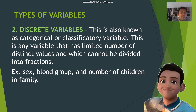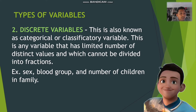Discrete variables are also known as categorical or classificatory variables. These are any variables that have a limited number of distinct values and which cannot be divided into fractions. Examples include sex, blood group, and number of children in the family. Discrete variables are often used in qualitative data.